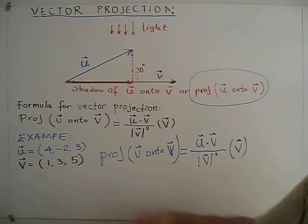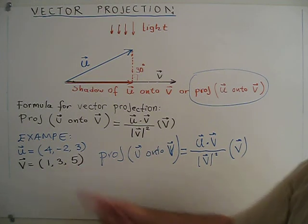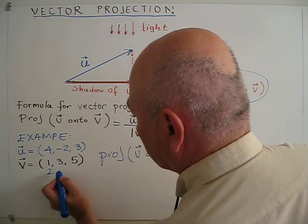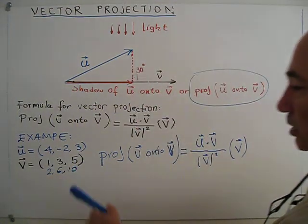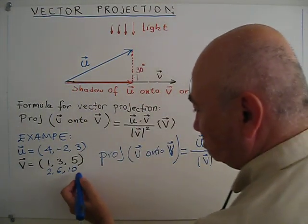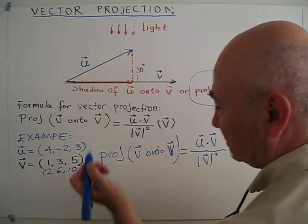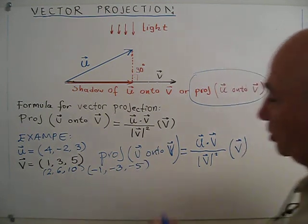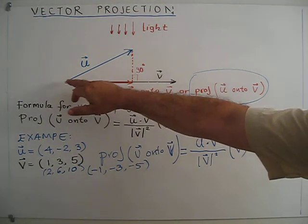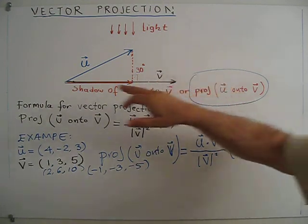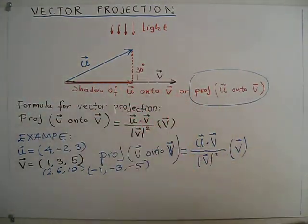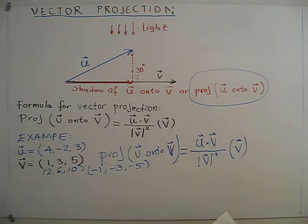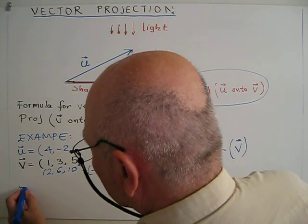For example, if you take vector V and multiply by 2, for example 2, 6, 10, then you can use instead of these two, you get the same result. Or anyone, just say multiply by negative 1: negative 1, negative 3, negative 5. What I would like to say is this vector V can be longer, shorter, or this way, it doesn't matter. Projection will be the same direction. But vector U, we shouldn't change vector U.